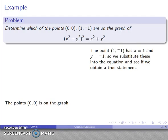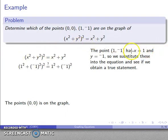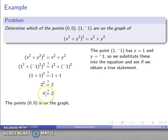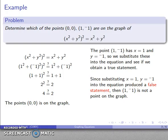What about the other point (1, −1)? My x coordinate is one and my y coordinate is negative one, so I want to substitute x equals one, y equals negative one into the equation and see if I get a true statement. On the left-hand side, one squared plus one squared is one plus one, which is two, and two squared is four. The big question is: is four equal to two? No — so this is a false statement, and the point (1, −1) is not on the graph of the equation.